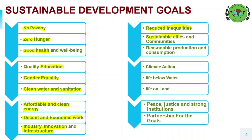Sustainable Cities and Communities — make cities and human settlements inclusive, safe, resilient and sustainable; Responsible Consumption and Production — ensure sustainable consumption and production patterns; Climate Action — take urgent action to combat climate change and its impacts; Life Below Water — conserve and sustainably use the oceans, seas and marine resources for sustainable development; Life on Land — protect, restore and promote sustainable use of terrestrial ecosystems, sustainably manage forests, combat desertification, and halt and reverse land degradation and biodiversity loss; Peace, Justice and Strong Institutions — promote peaceful and inclusive societies for sustainable development, provide access to justice for all, and build effective, accountable and inclusive institutions at all levels; Partnership for the Goals — strengthen the means of implementation and revitalize the global partnership for sustainable development.